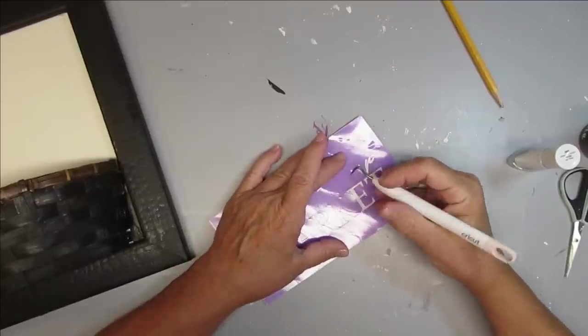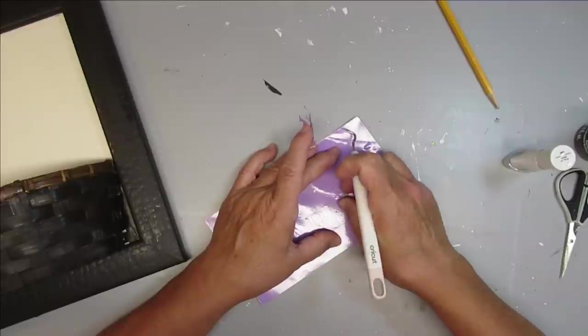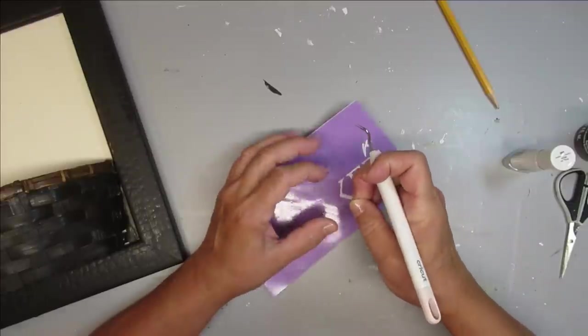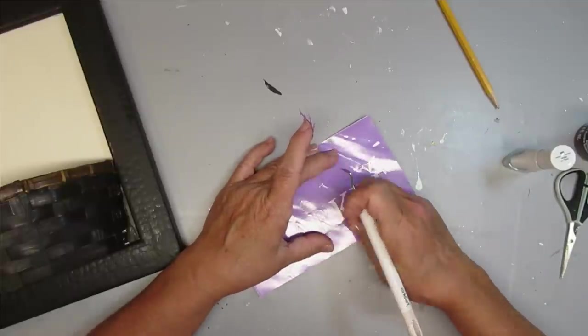Then I went to my Cricut and I cut out a stencil just using a scrap piece of vinyl. This says Fresh Flower Market and I'll have this available as a free printable on my website. You'll find the link for that down in my description box.